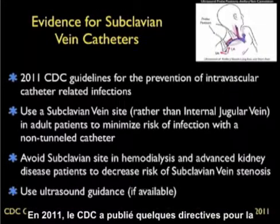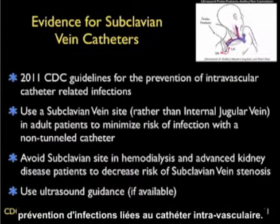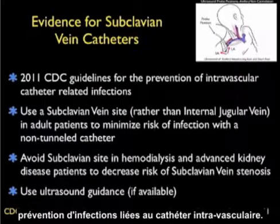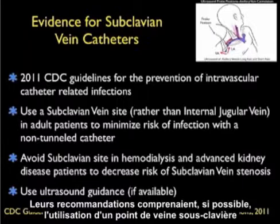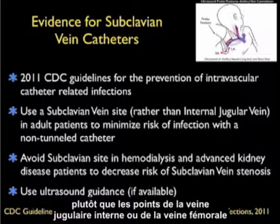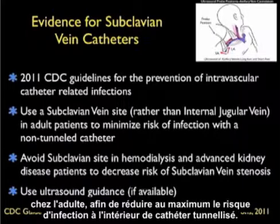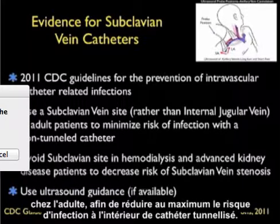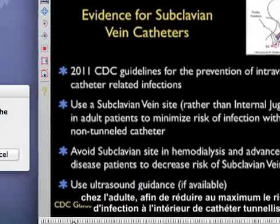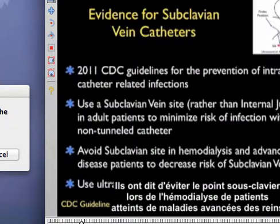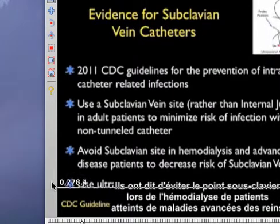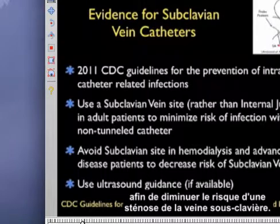In 2011 the CDC came out with guidelines for the prevention of intravascular catheter-related infections. Their recommendations included using a subclavian vein site if possible rather than internal jugular vein or femoral vein sites in adult patients to minimize the risk of infection with a non-tunneled catheter. They did say to avoid the subclavian site in hemodialysis and advanced kidney disease patients to decrease the risk.